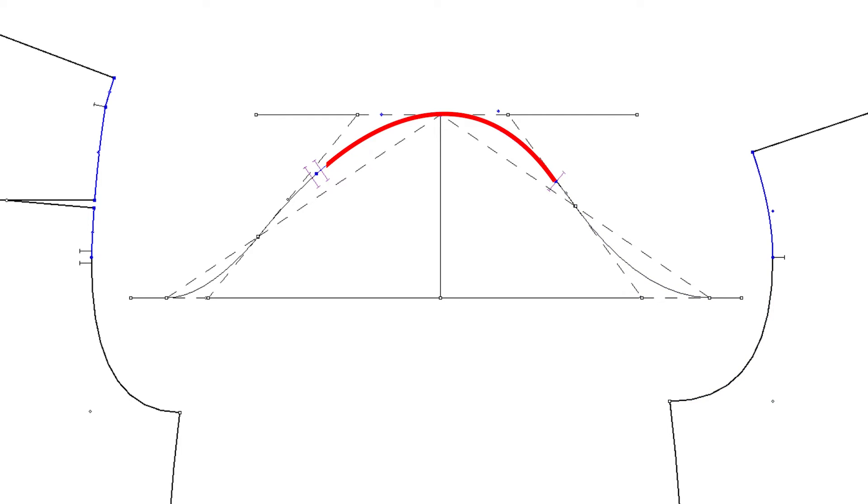If you measure the rest, the sleeve armhole is a little bit longer than the body armhole because the sleeve has ease. Even if I don't have a lot of ease, there is a little bit of ease. Divide this ease by two, so the back sleeve cap and the front sleeve cap have the same amount of ease. This shoulder notch will go with this notch on the body.